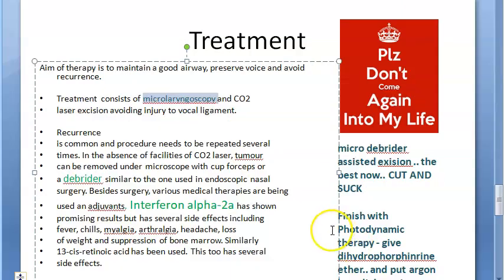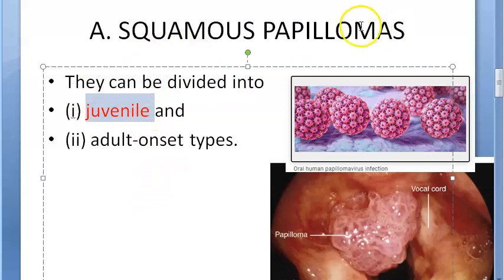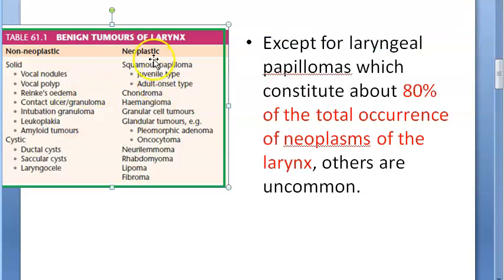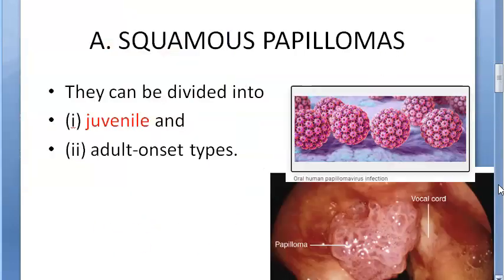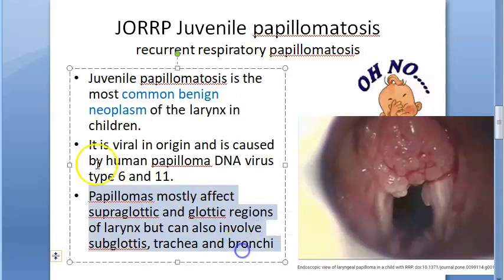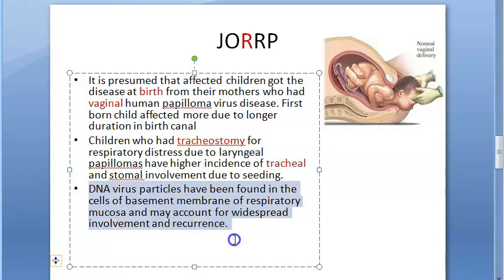To summarize juvenile papillomatosis: it is a neoplastic but benign condition — it will not become malignant. It is the most common benign neoplasm of the larynx in children, caused by HPV 6 and 11. It affects the glottis, supraglottis, subglottis, trachea, and bronchi. It is acquired through vaginal delivery, and tracheostomy increases the risk of tracheal involvement. DNA particles found in the respiratory mucosa explain the recurrence.